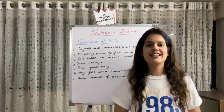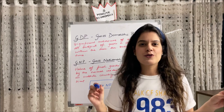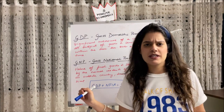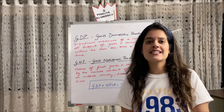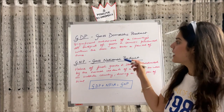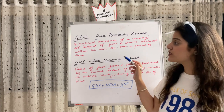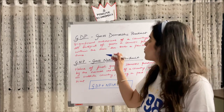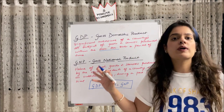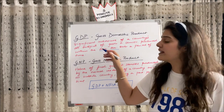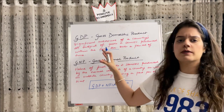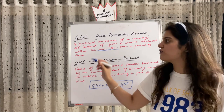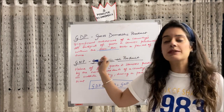Now moving to the aggregates, starting with the most famous concepts: GDP and GNP. GDP stands for Gross Domestic Product. It is a significant measure of a country's total output of goods and services produced within the domestic territory of a country over a period of time. When writing about GDP, remember: it is produced within the domestic territory of a country.